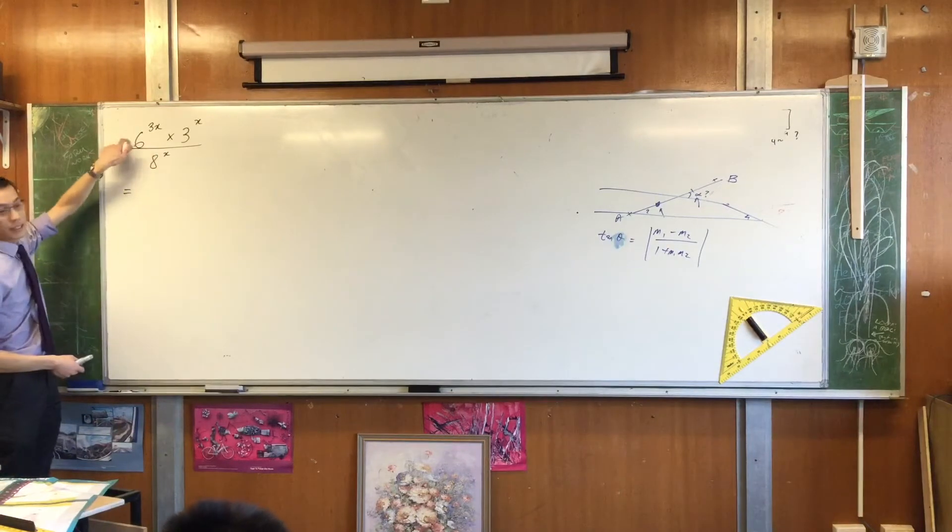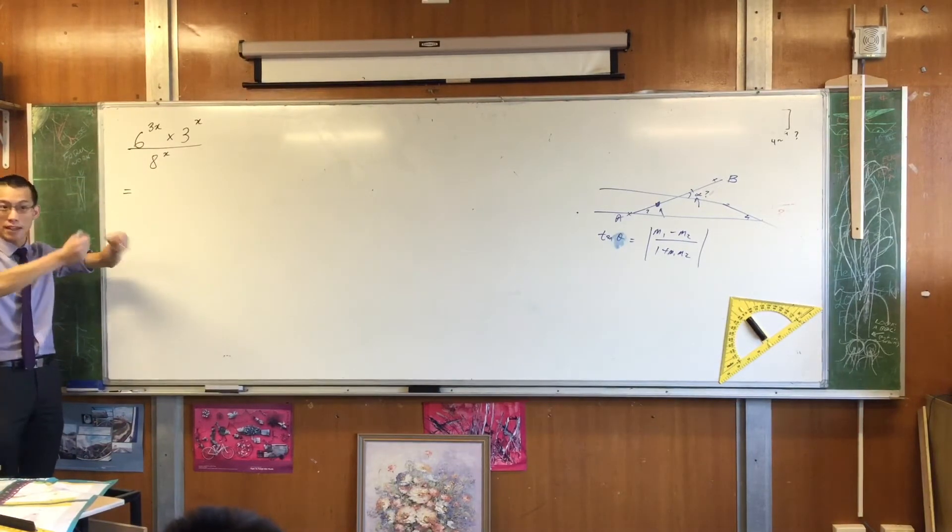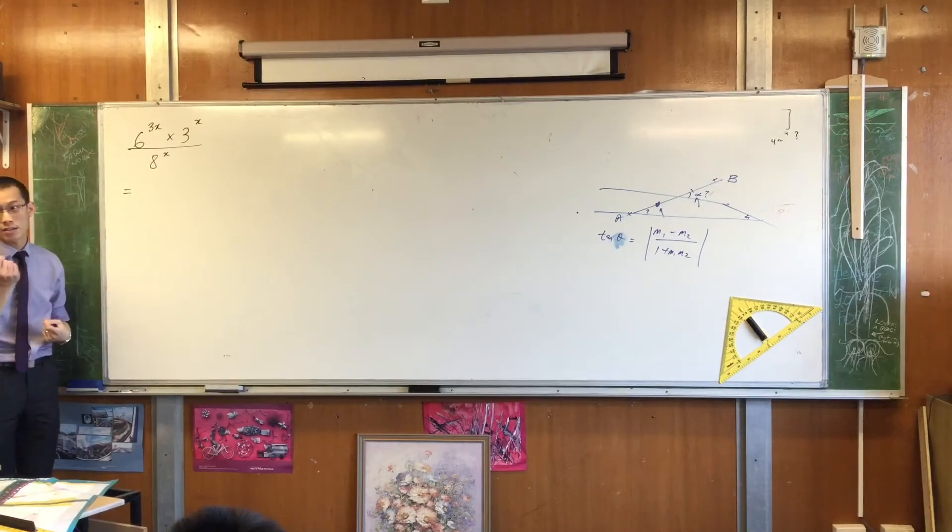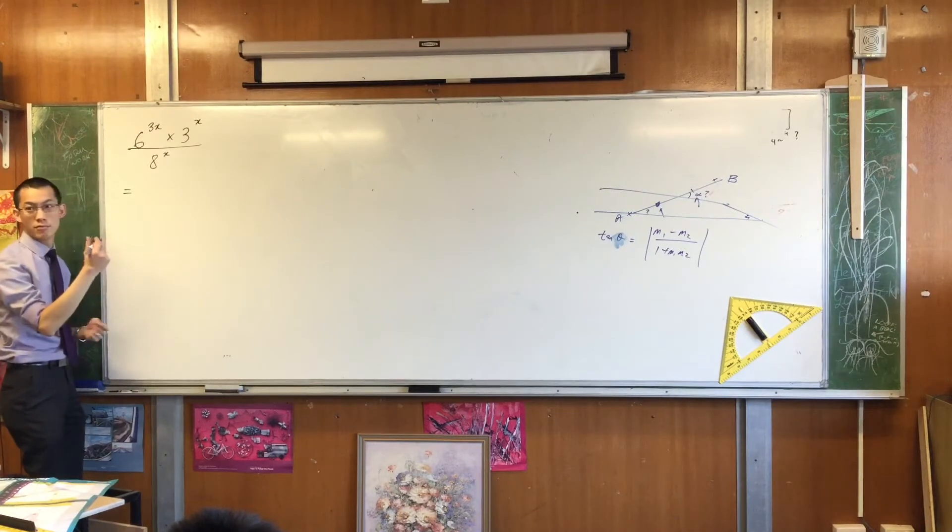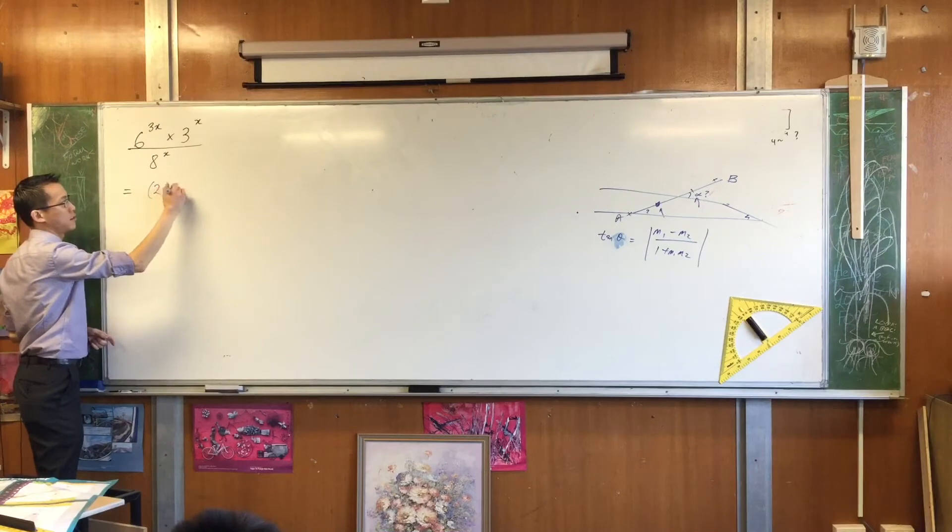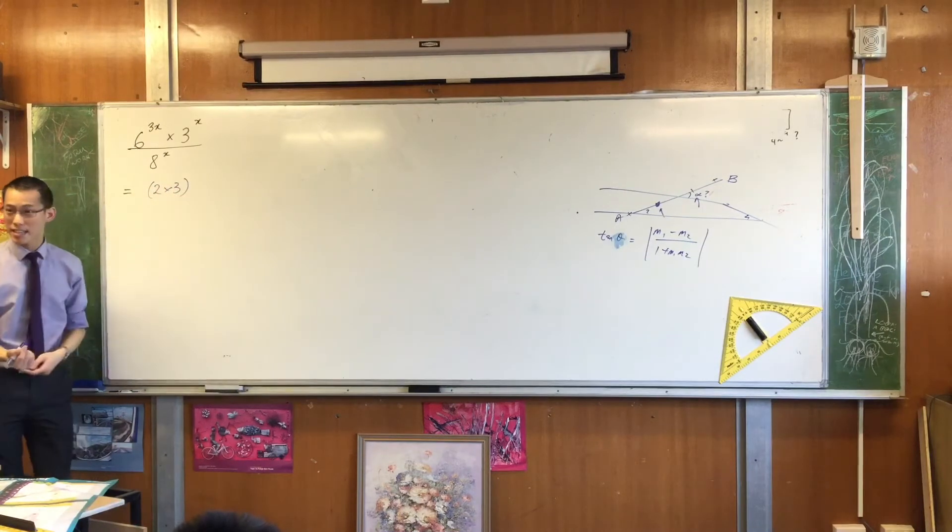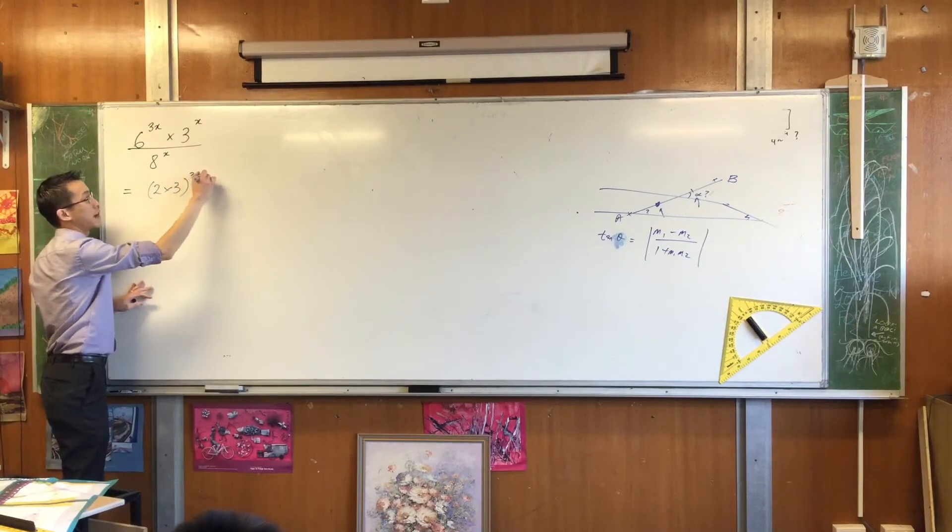So for example, 6, I can break that up into pieces, I can factorize it. 6 I would write as? 2 times 3. That's what you need to write. 2 times 3. There's 6 and it's been raised to the power of 3x.